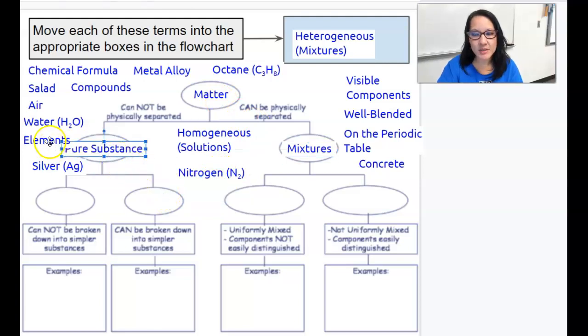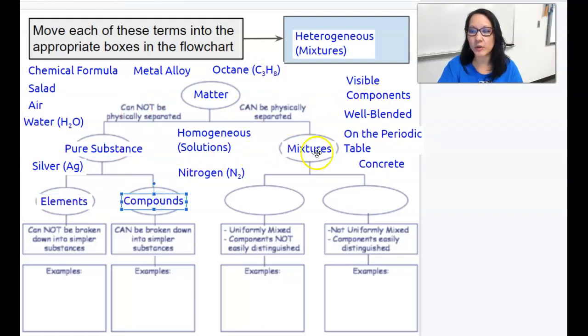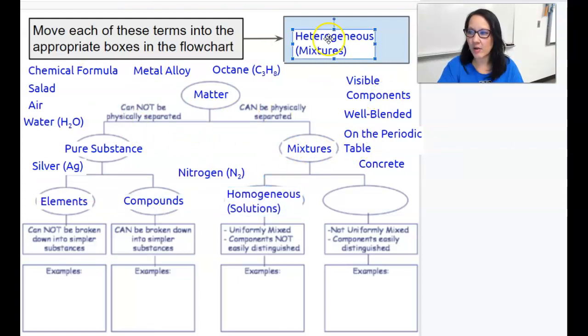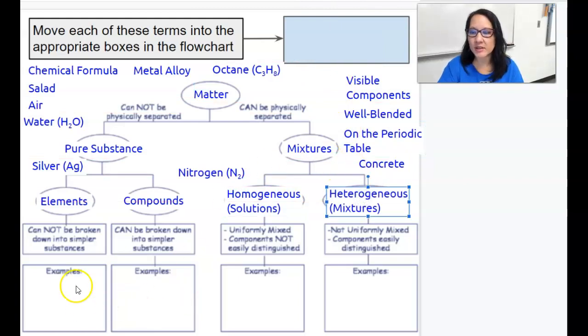If you have a pure substance, there are two types of pure substances: there's elements and there are compounds. For mixtures, there are two different mixtures: there's homogeneous solutions and there are heterogeneous mixtures.